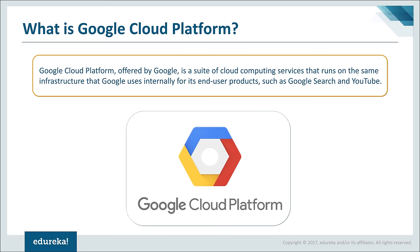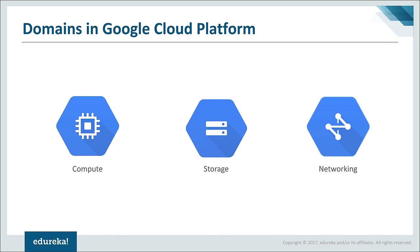Google Cloud Platform has a lot of services divided under domains. What are the different domains? You have compute, you have storage, you have networking, and you have some other domains as well. But the main domains in Google Cloud Platform — which can basically host any kind of application you can imagine — are compute, storage, and networking. Using these domains, you can create an infrastructure for any kind of application.